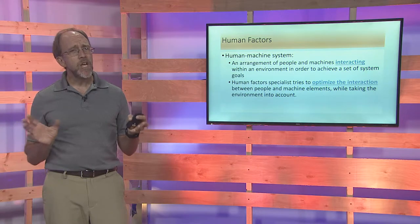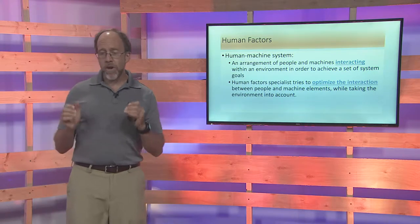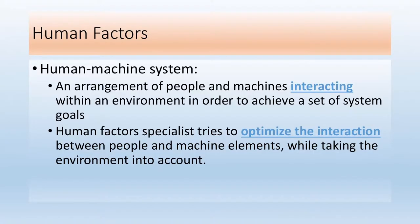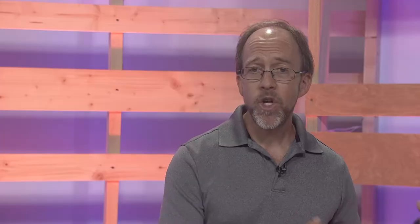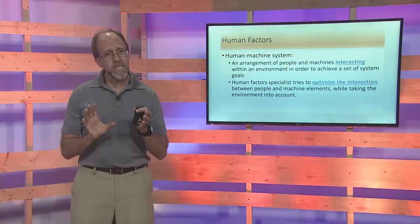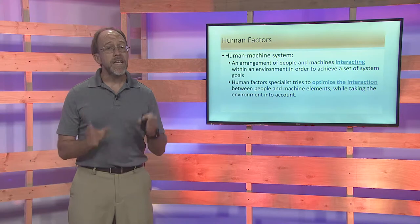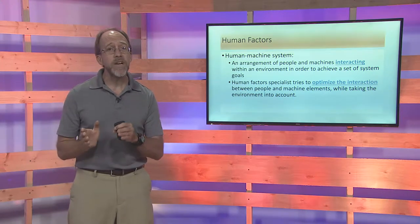Let's look at human-machine systems. A person — or multiple people — may interact with a machine in a specific environment with specific goals. What we are trying to do with human factors engineering is optimize that interaction based on those goals. Human factors engineering does encompass the system, and even though it doesn't get into the guts of machine design, it covers the portion dealing with the machine's interface with the human.